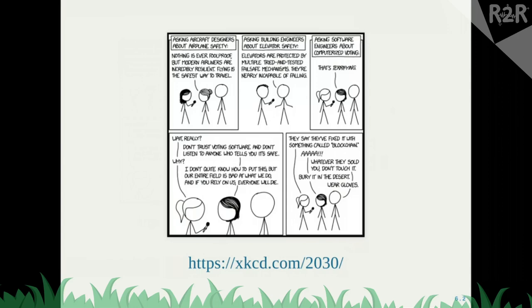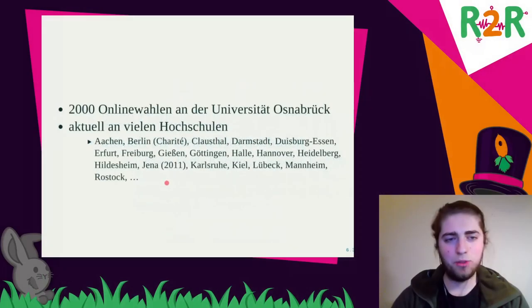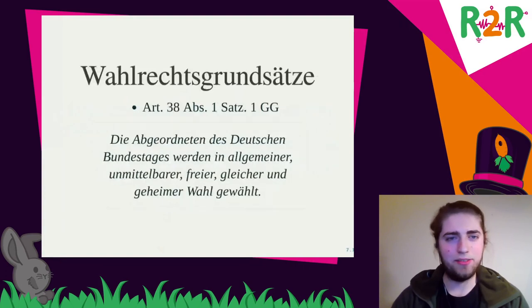Let's get into the history of online elections at universities. Wikipedia says that the first online election was conducted in 2000 at the University of Osnabrück. It was mandated by the federal government because they wanted a trial on whether online elections could be a viable option for federal elections in Germany. Other universities also started using online elections, but only in recent years — the University of Vienna being an earlier example with 2011.